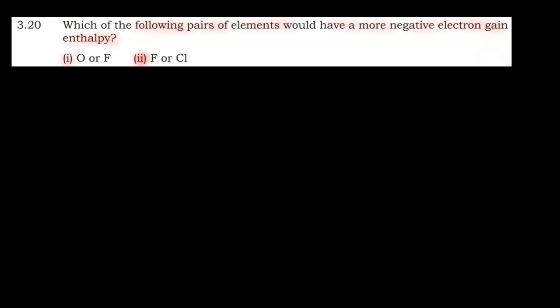There are two parts given. The first one is oxygen and fluorine, and the second one is fluorine and chlorine. You have to tell which element will have the more negative electron gain enthalpy. More negative means more energy will be released to accept the electron.